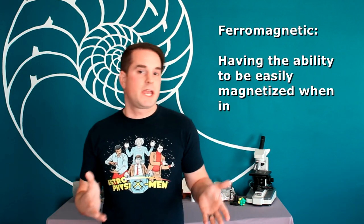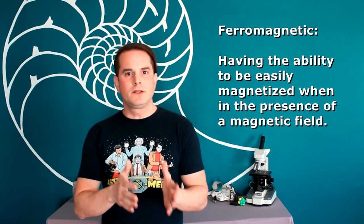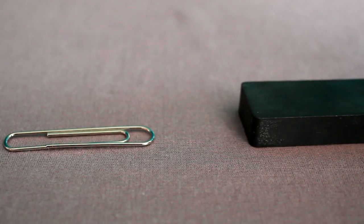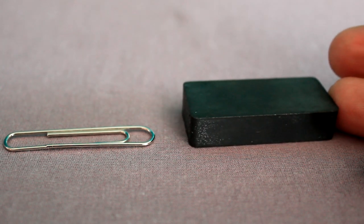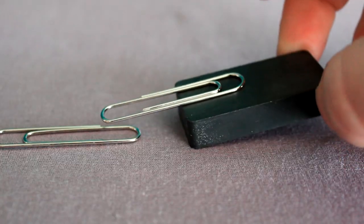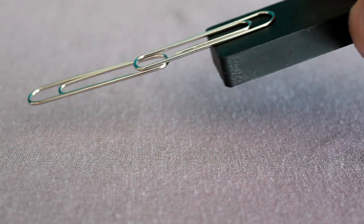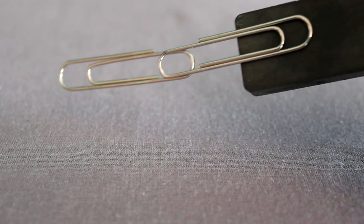Elements that are ferromagnetic include iron, but also nickel, cobalt, and gadolinium. When in the presence of a strong enough magnetic field, they will become magnetized. They'll become magnets themselves. This is why if you have a paperclip stuck to a magnet, the paperclip can also now pick up other paperclips.